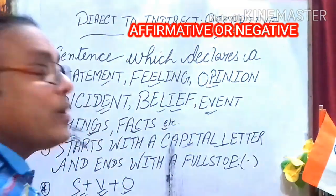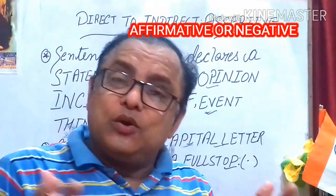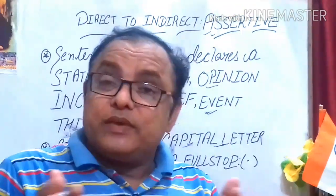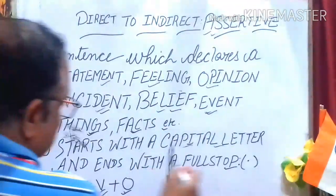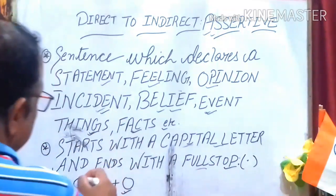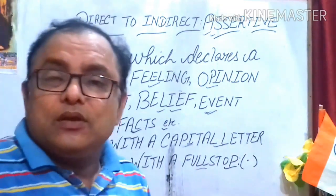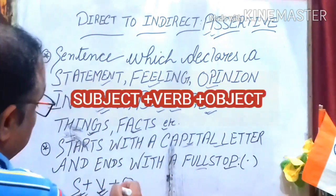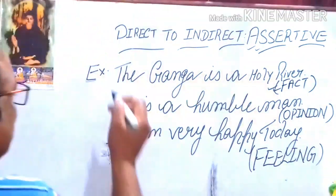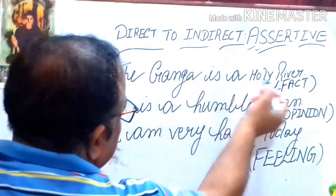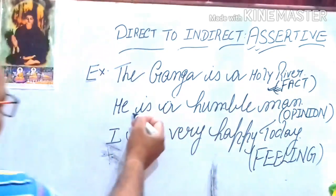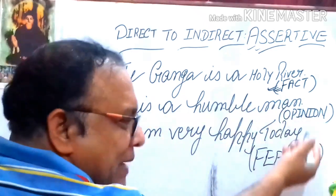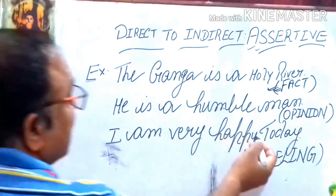An assertive sentence can be either affirmative or negative. Most of the sentences of the English language are assertive sentences. An assertive sentence starts with a capital letter and ends with a full stop. Its purpose is to relay information. The structure of an assertive sentence is: subject + verb + object. For example, 'The Ganga is a holy river' is a fact; 'He is a humble man' is an opinion.